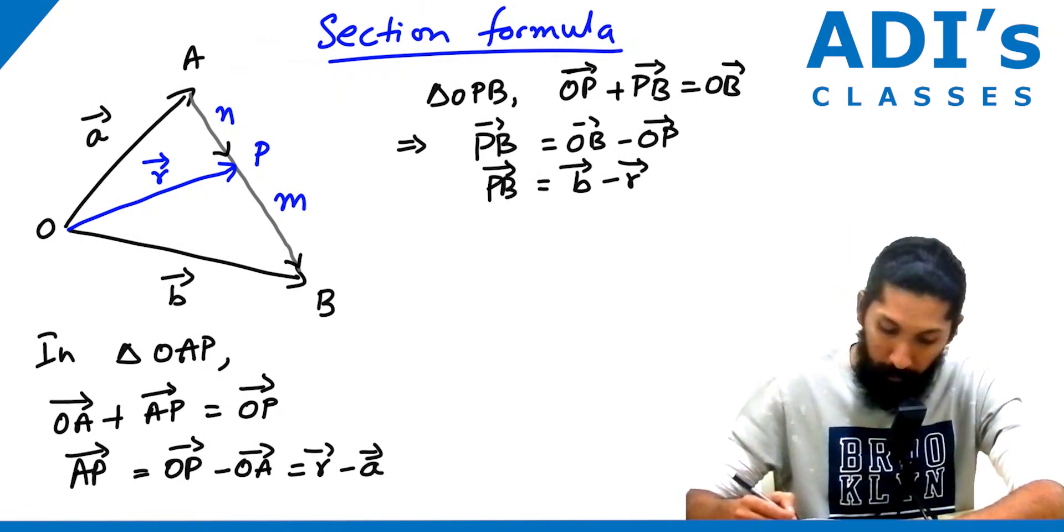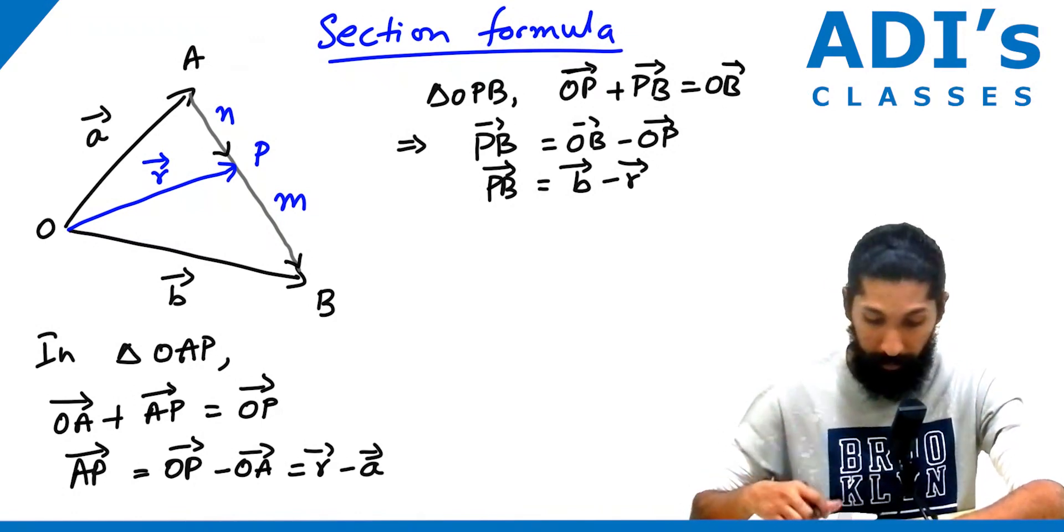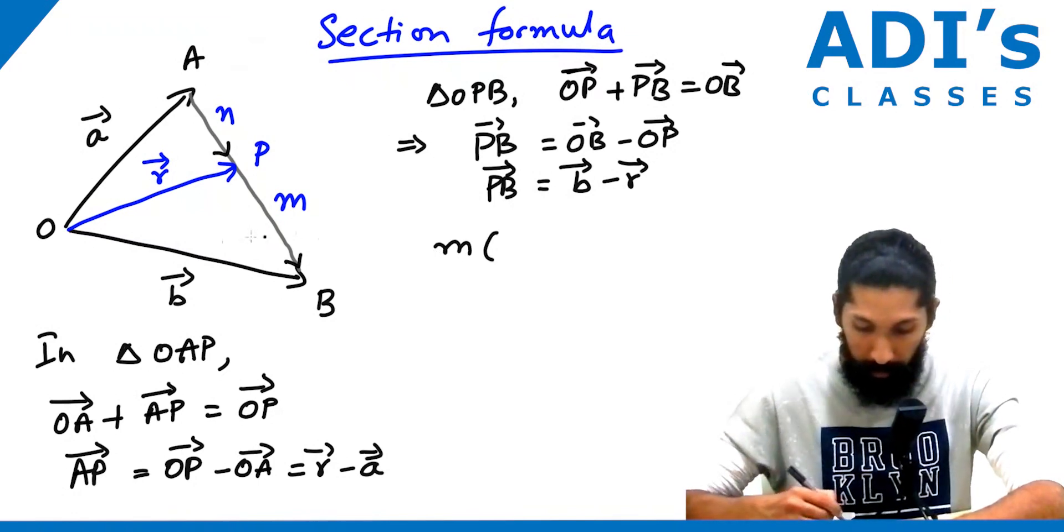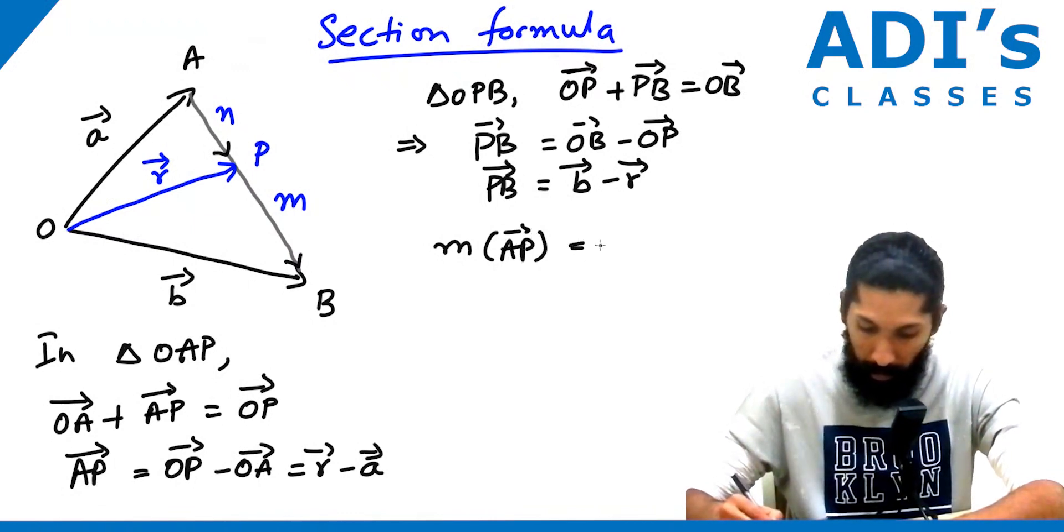Now, from the section formula, we know that M into AP is equal to N into PB.